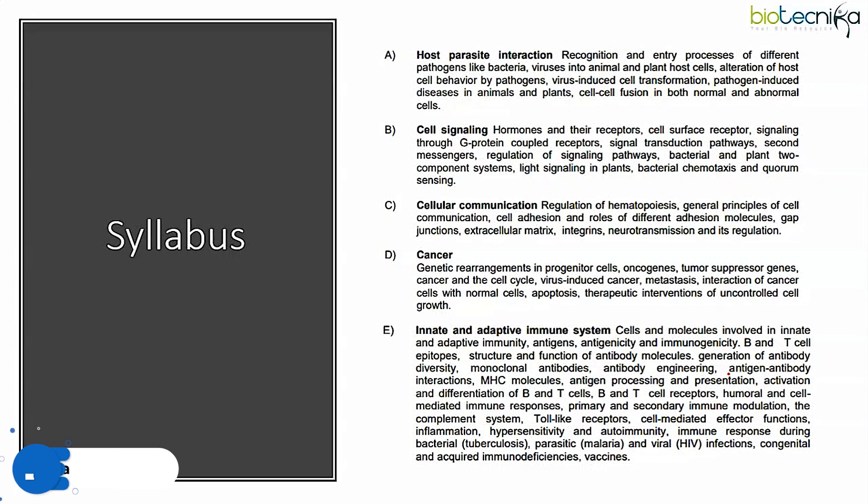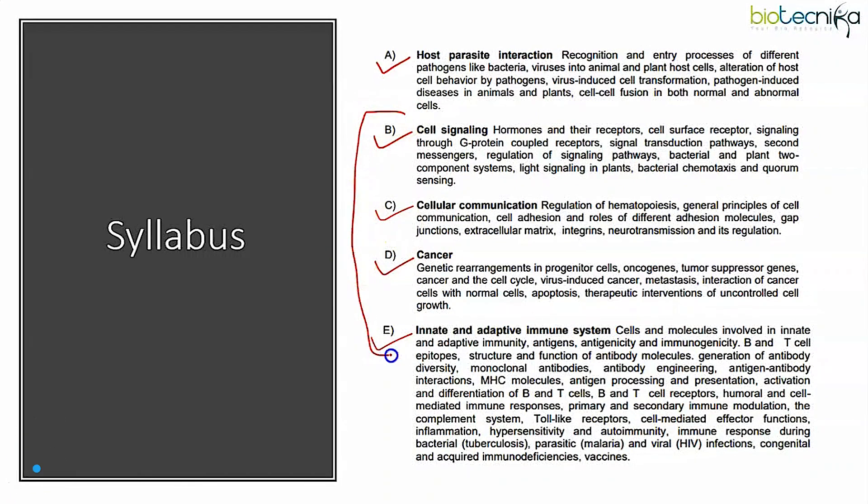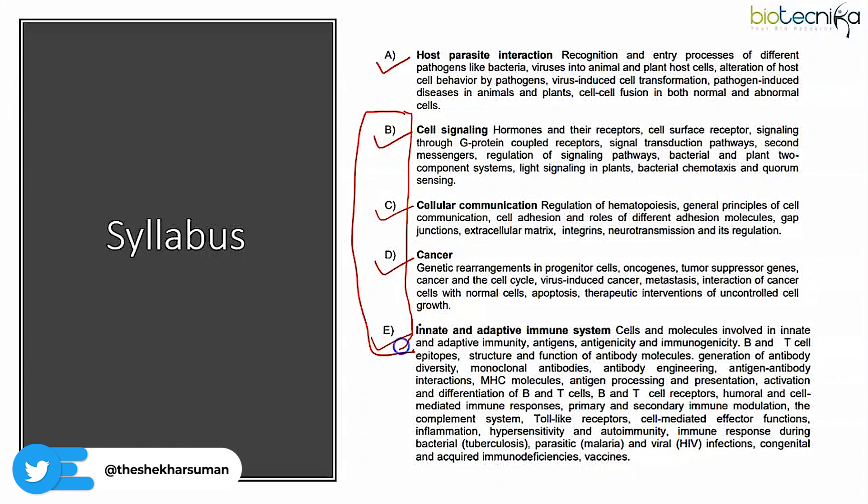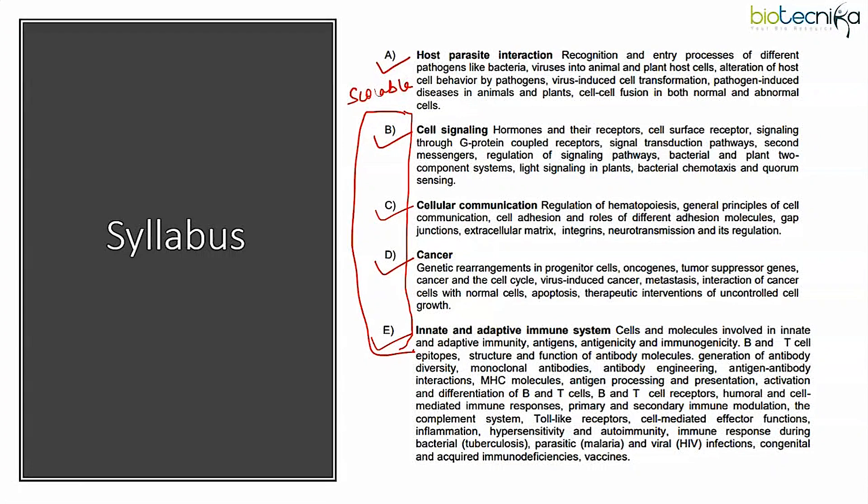The syllabus is divided into five subunits: 4A - host parasite interaction, B - cell signaling, C - cellular communication, D - cancer, and E - immunology. Among these five subunits, the most important are B, C, D, E. These are not only important but scoreable as well and should never be skipped if you are preparing for CSAR NET exam. I will come into details regarding the important topics from each subunit.